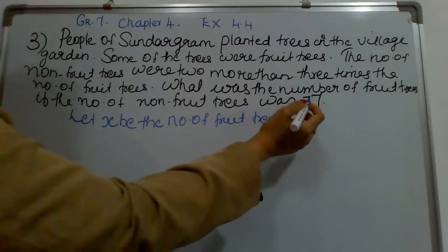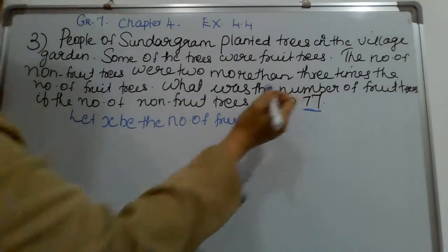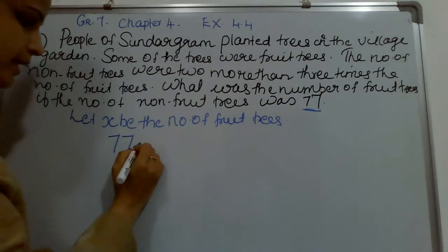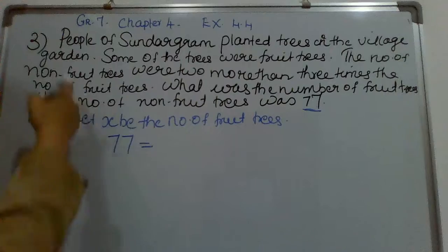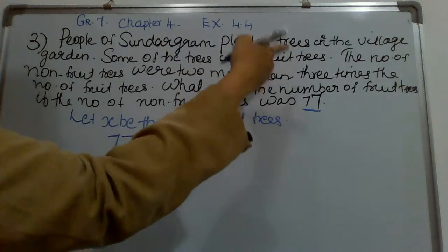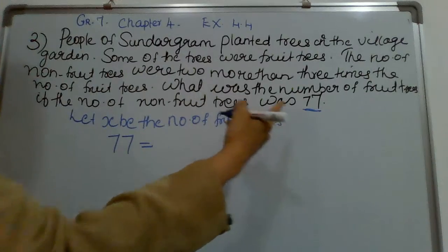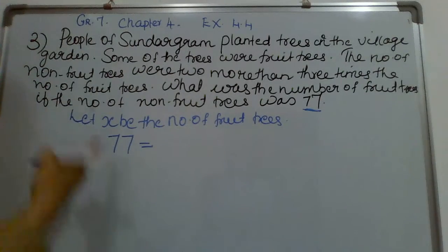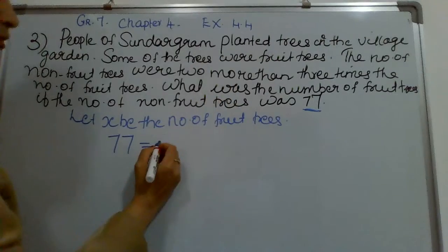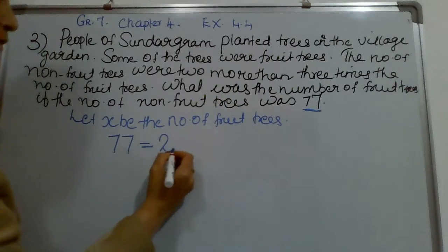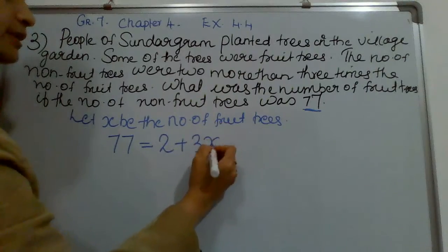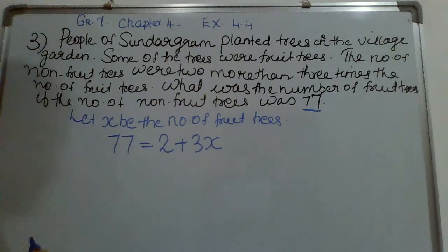So, the non-fruit trees — how many non-fruit trees are there? It is 77. The number of non-fruit trees is 2 more than 3 times the fruit trees. So, this gives us our equation.